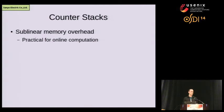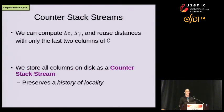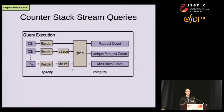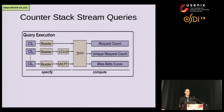This makes the algorithm practical to use online — we can compute MRCs in running production systems. Furthermore, we can compute delta X, delta Y, and reuse distances using just the last two columns of C, without maintaining the full matrix. However, we do save the matrix to disk as a counter-stack stream, which serves as a history of locality — a kind of database of workload behavior. We can query this database in interesting ways: we have a library with specification operations that let us look at specific time regions of a workload, combine various workloads to model how they'd behave in a shared cache, and compute miss ratio curves and unique request counts for any workload specification.